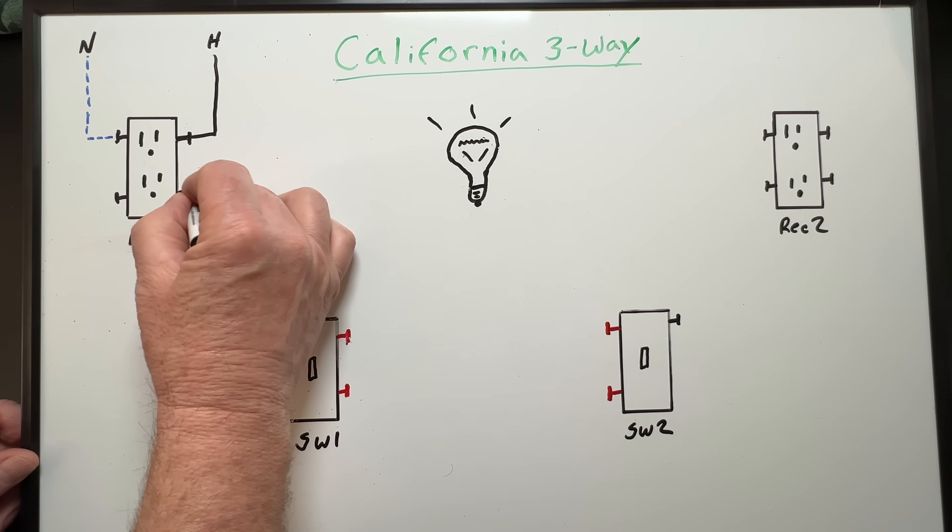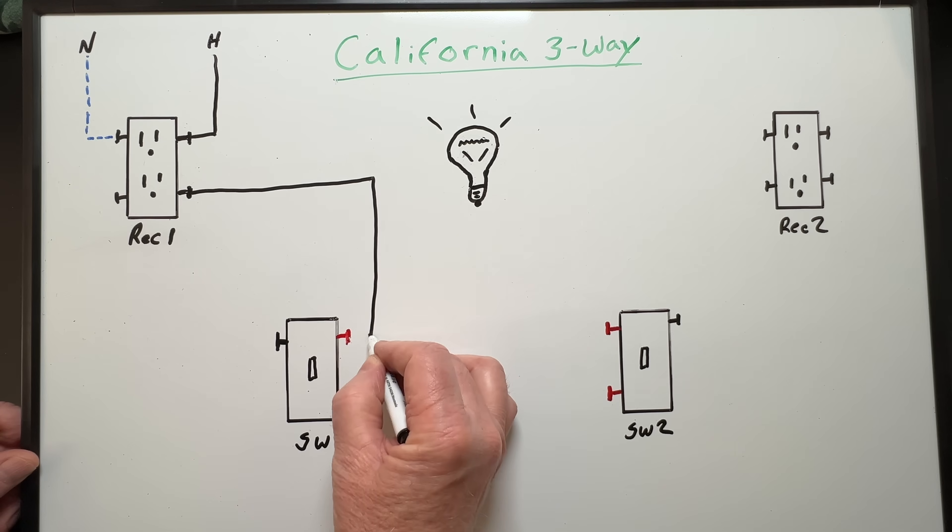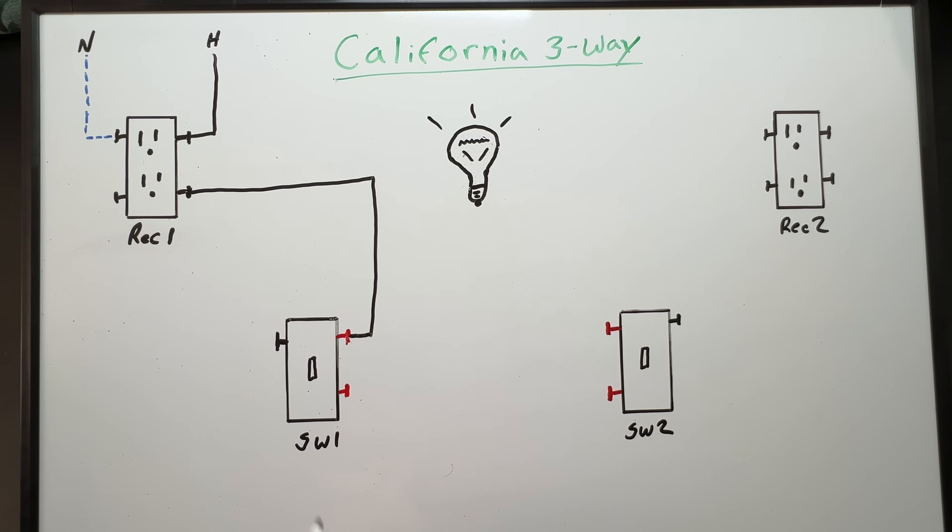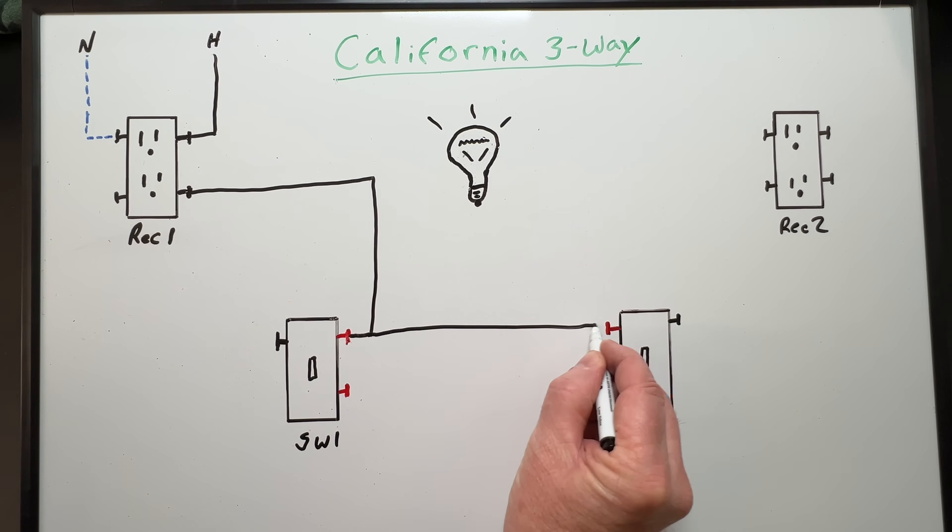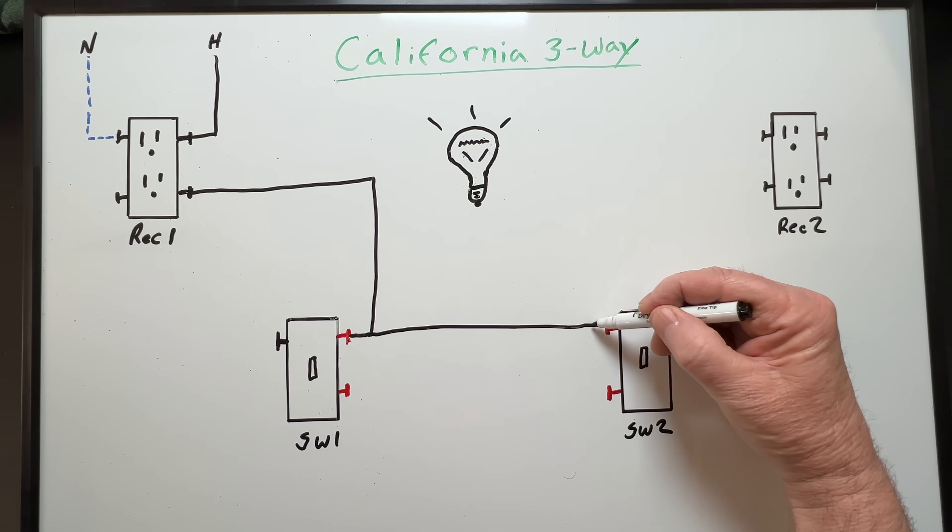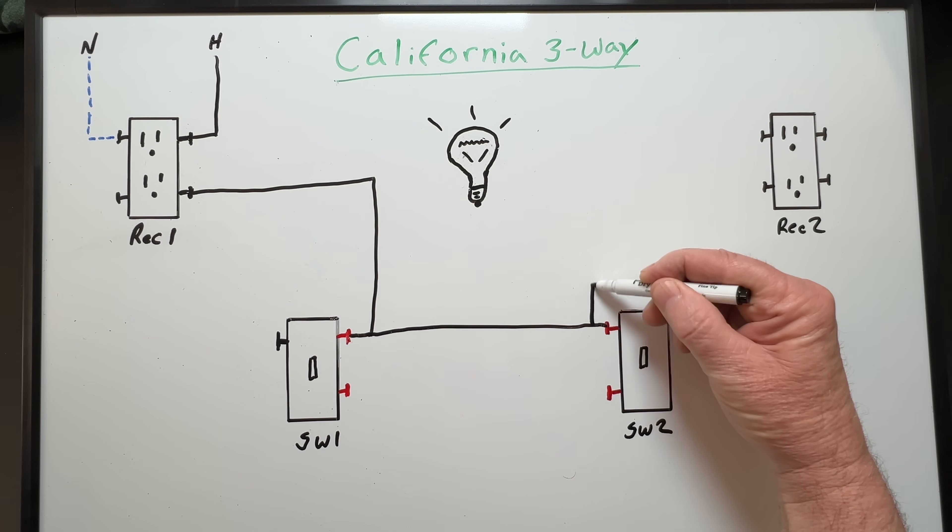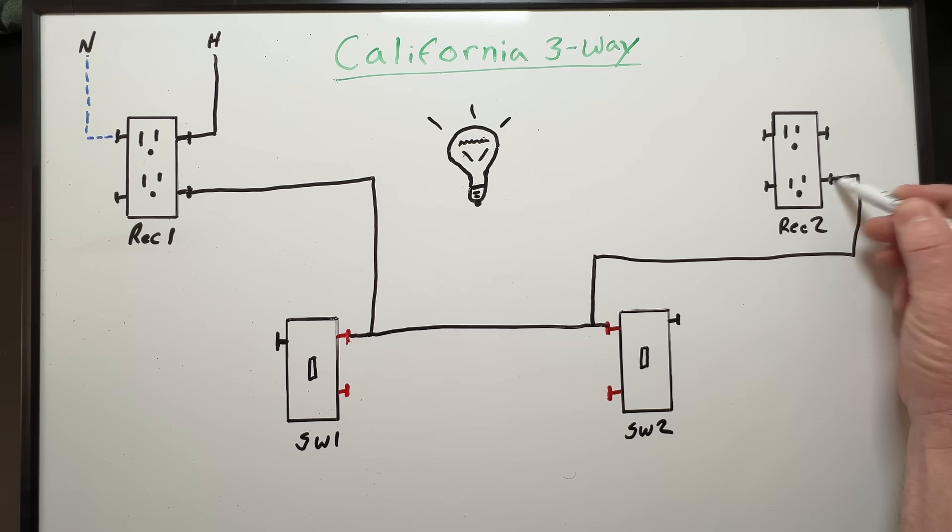First, we'll take a black hot wire from receptacle one down to one of the gold traveler screws on switch one. It doesn't matter which screw. Now we'll connect our switches together. We'll take a black hot wire from our gold traveler screw on switch one over to the gold traveler screw on switch two. Next, we'll carry our black hot wire from the traveler screw on switch two up to receptacle two.